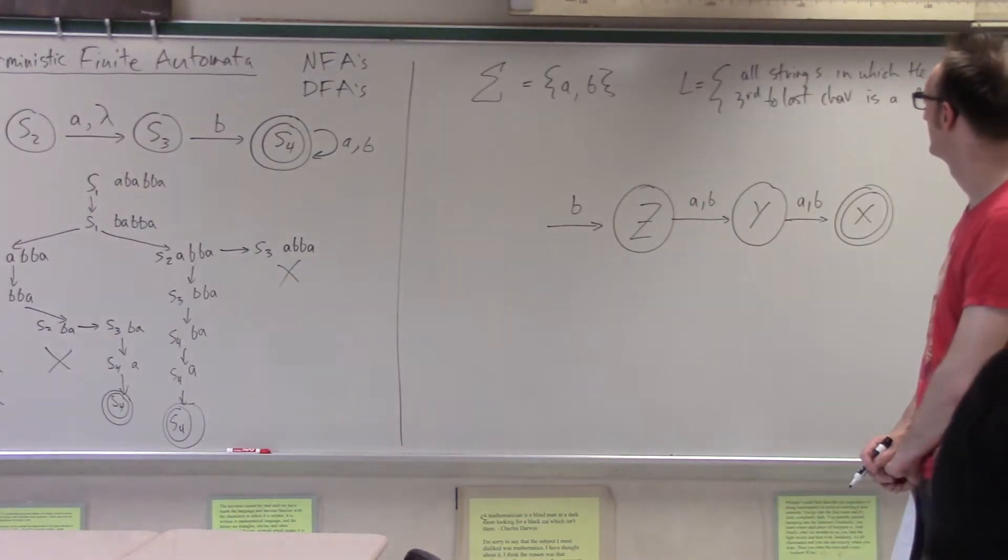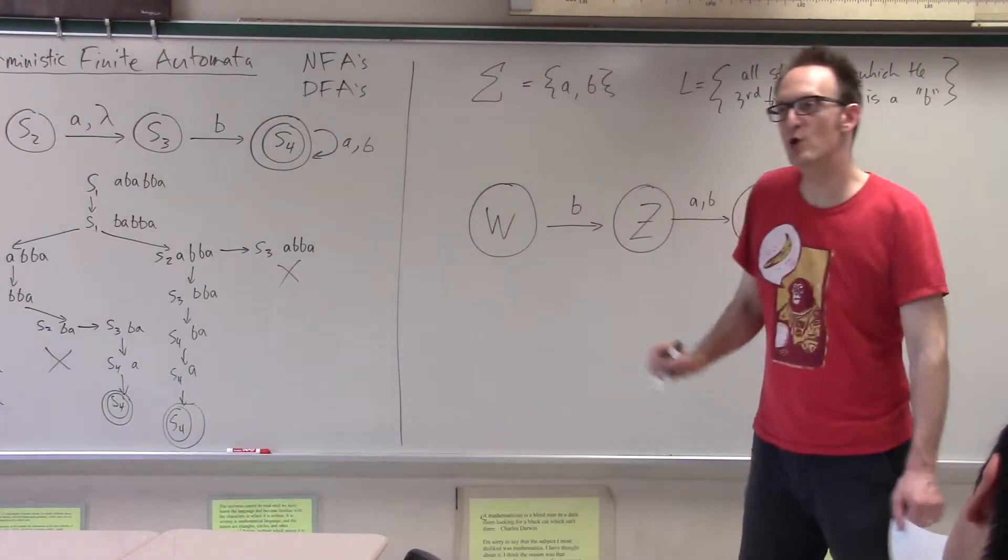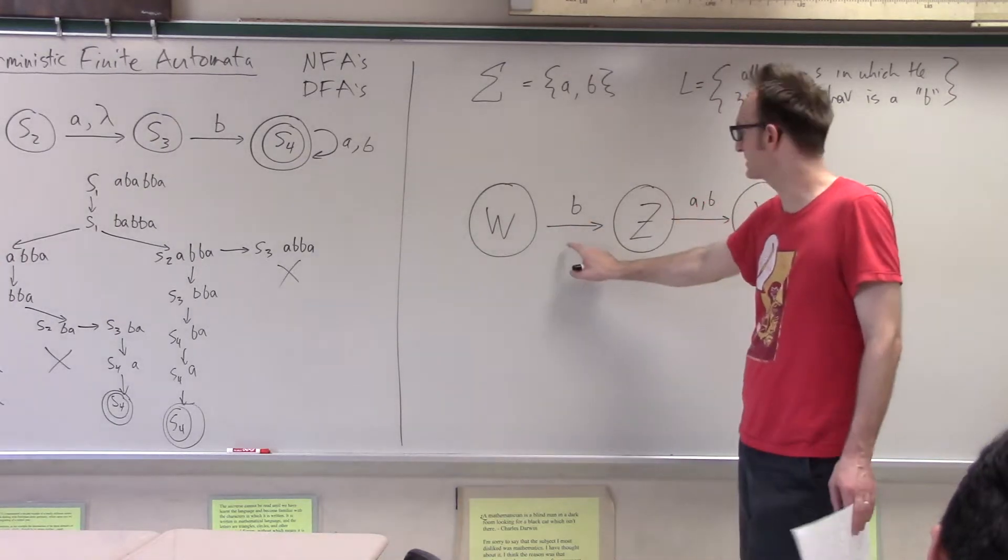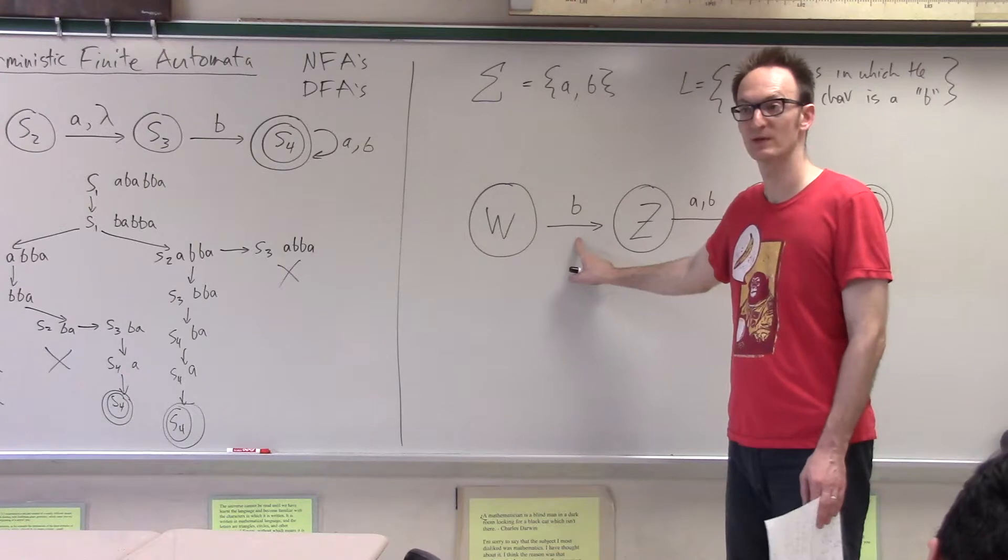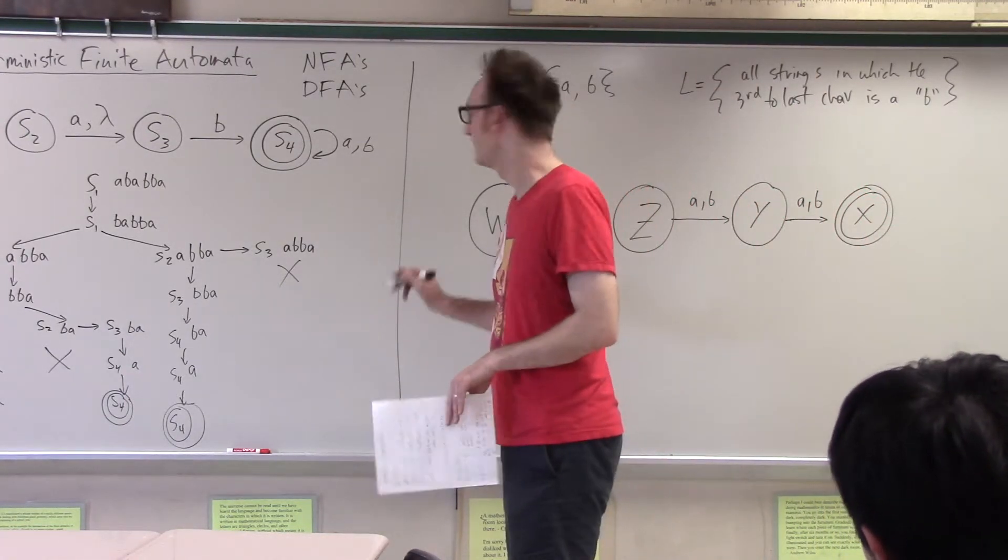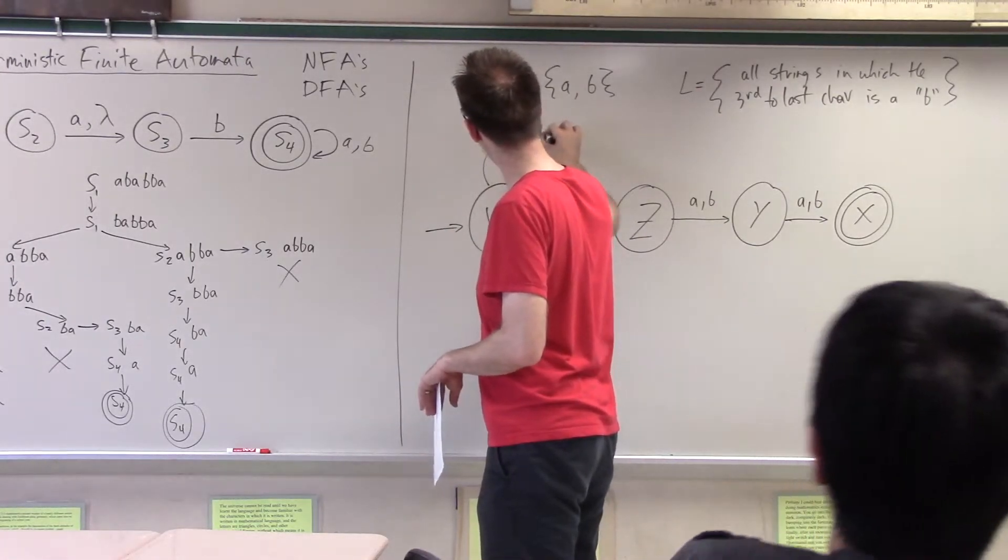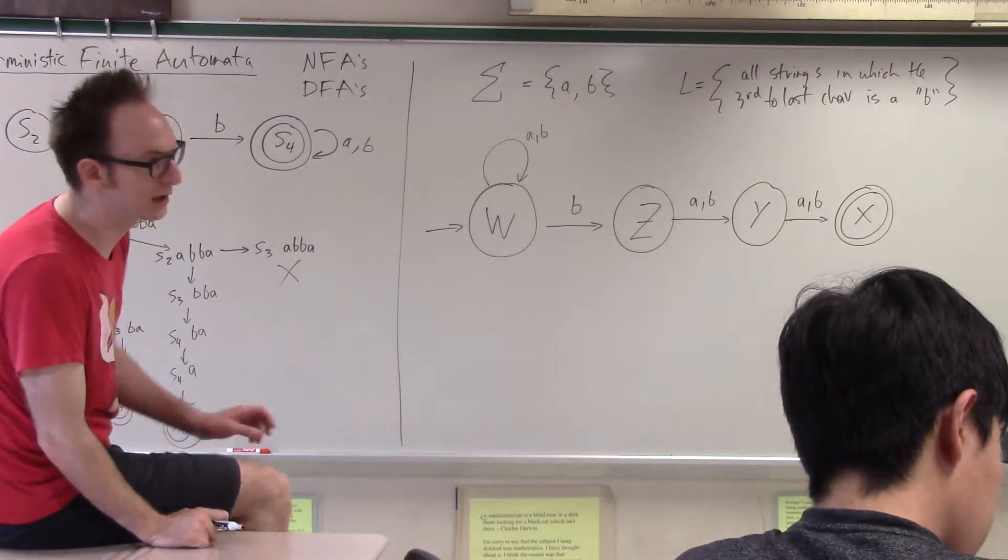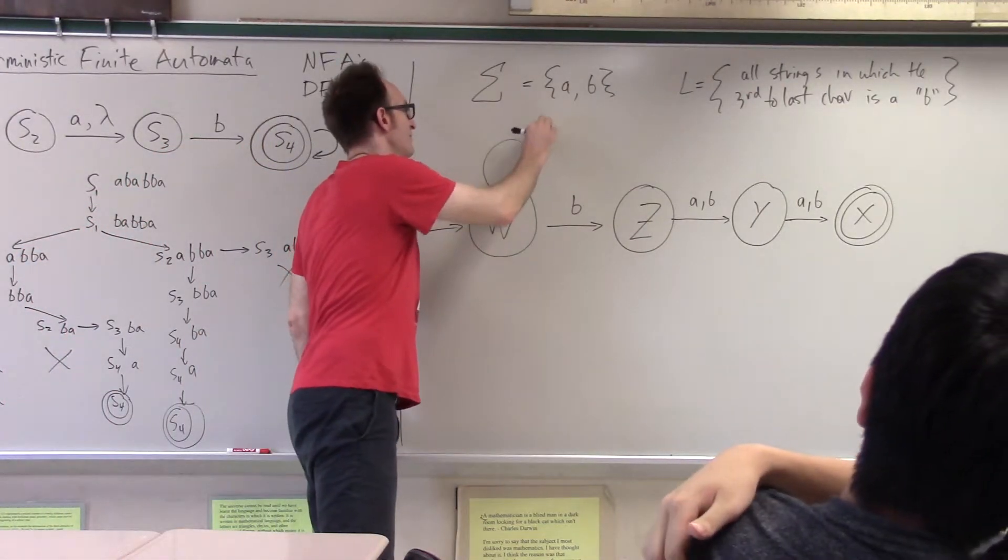Okay. But now, the problem is I never know when I'm in state W whether the character I'm about to process actually is my third to last character. If I had, so okay, so here's what we do. Can I just kind of finish this off? Yeah. I just non-deterministically guess at every point in my string whether or not it is the third to last character or not. Okay. So suddenly, this is just like beautifully solved.